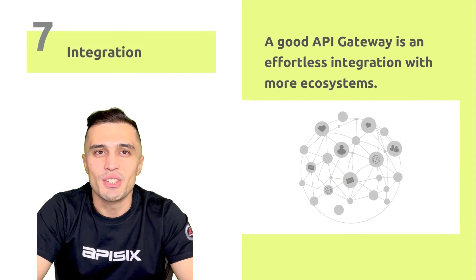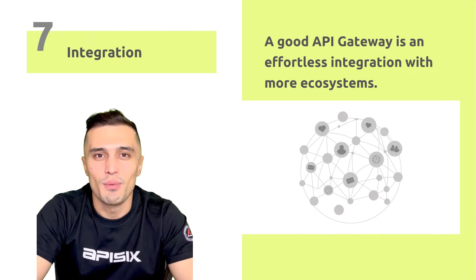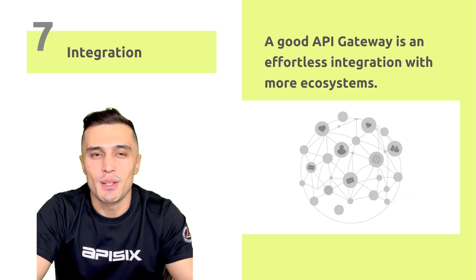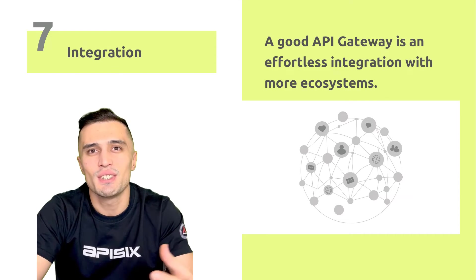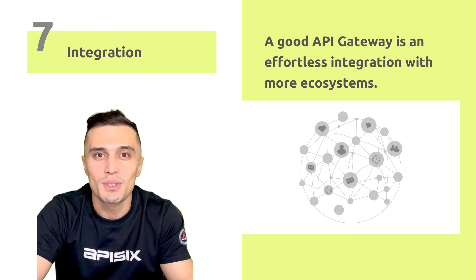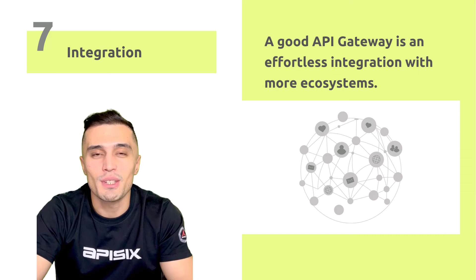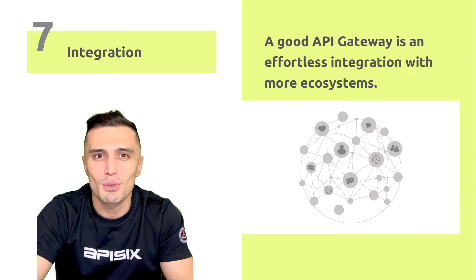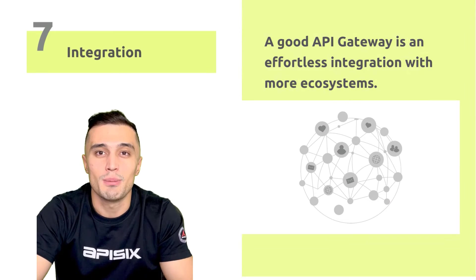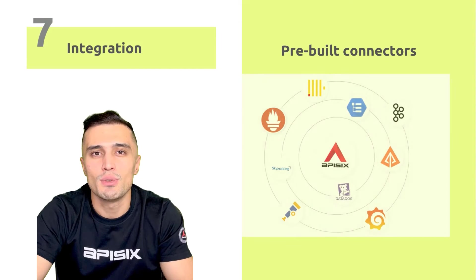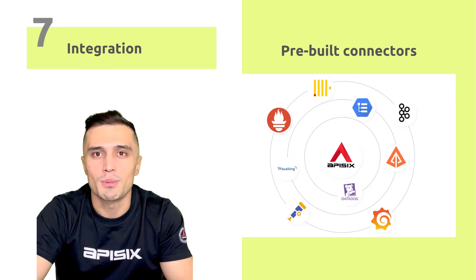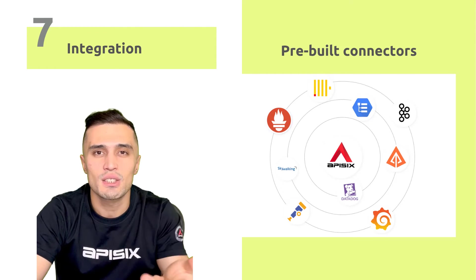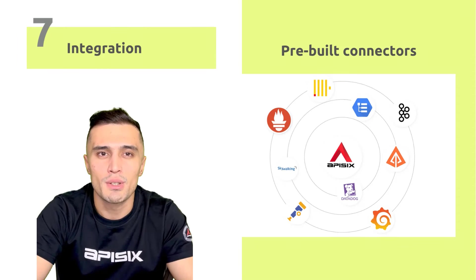Number seven is integration. A good API Gateway should enable effortless integration with more ecosystems. Check if it integrates with other products, tools, platforms, and services. Investigate whether it supports several application protocols, compatibility with third-party identity providers for authentication, and whether it provides pre-built connectors that you can easily integrate with observability platforms like Prometheus, SkyWalking, Elasticsearch, or OpenTelemetry.